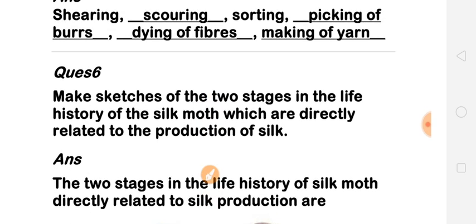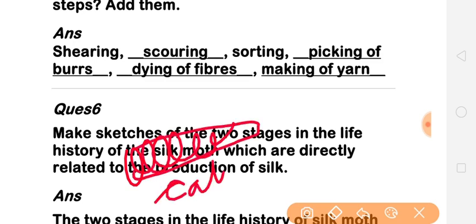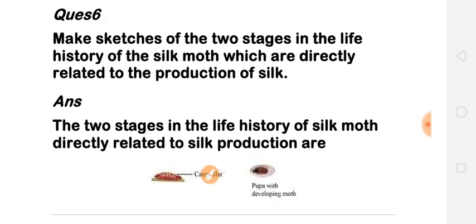Question number 6: make a sketch of two stages of the life history of the silk moth which are directly related to the production of silk. The two stages are: first, the caterpillar stage, and then the pupa stage. You can also see these in the book.